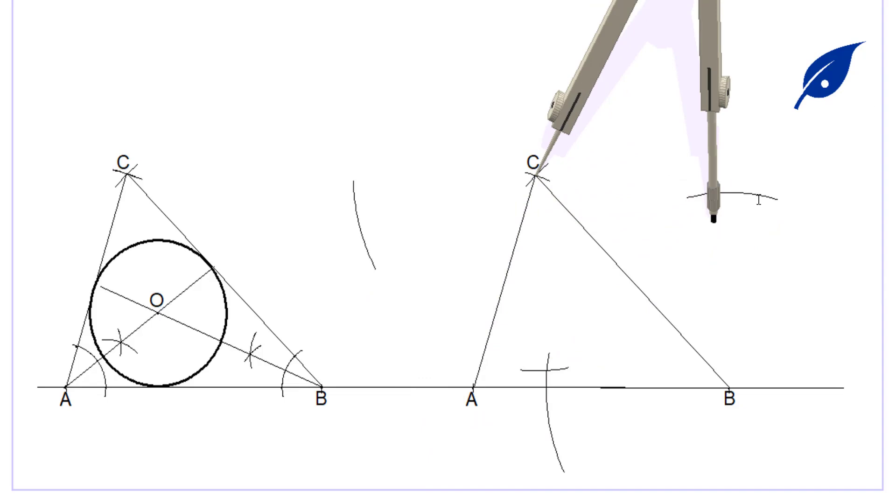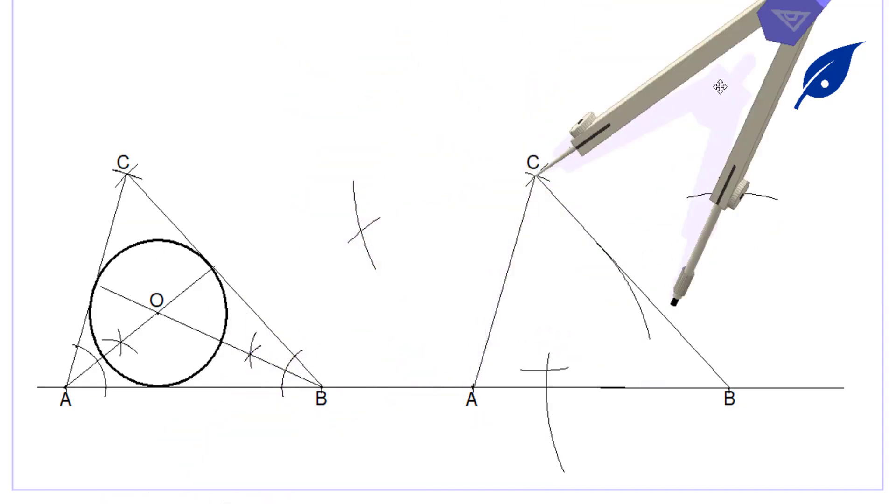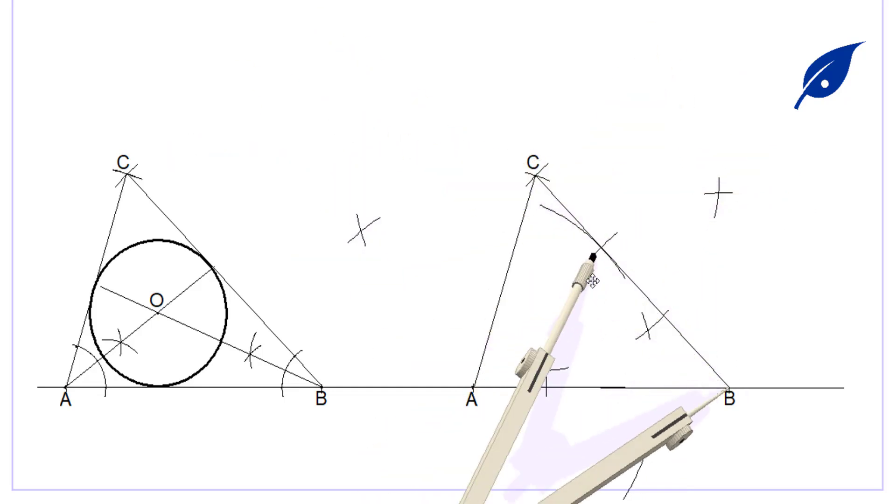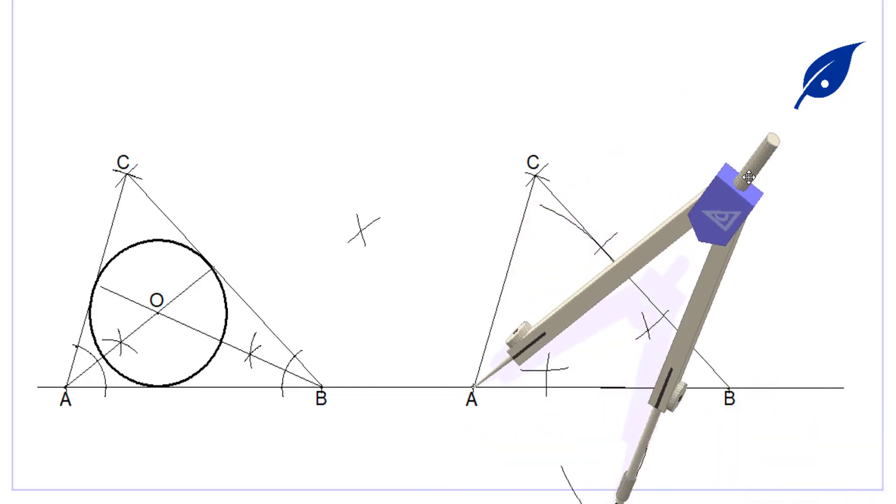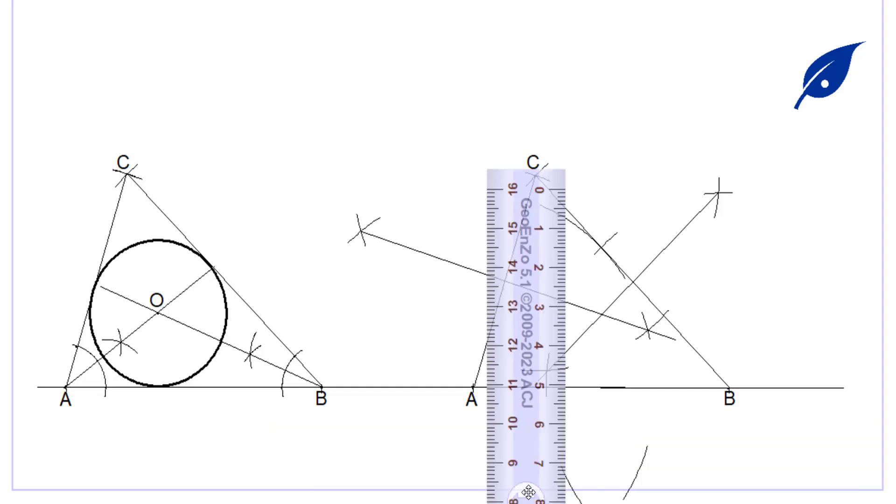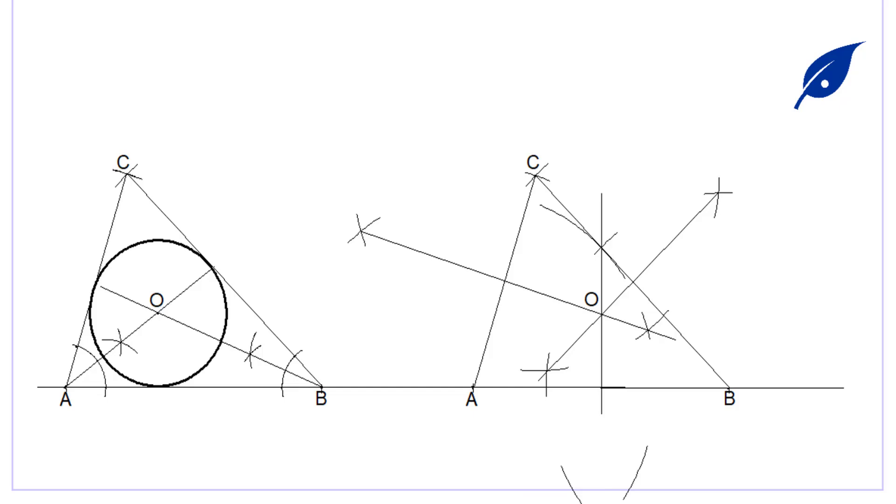Then bisect side AC, then bisect side AB. Remember to clean the excess construction lines. After that, you connect your points. From AC is the first that we've connected, then from CB, then AB. The point where the three of them meet we call O.